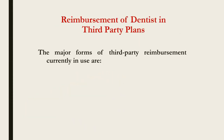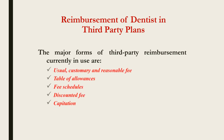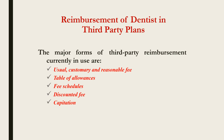The reimbursement to the dentist in third-party plans is of major forms currently in use. They are: usual, customary and reasonable fees; table of allowances; fee schedules; and discounted fee. Usual, customary and reasonable fee may be a two-marks or four-marks question. Table of allowances, fee schedules, and capitation are important from an examination perspective.